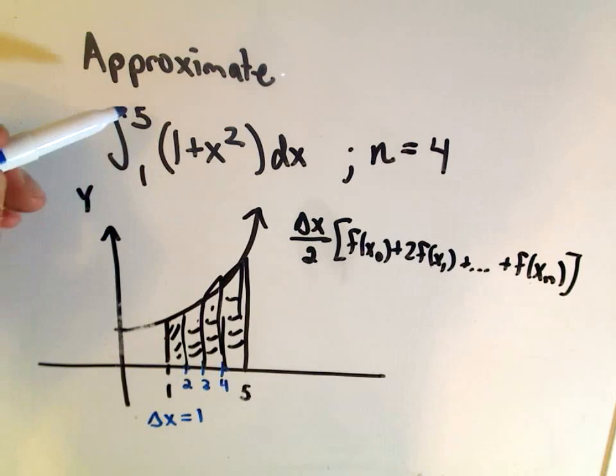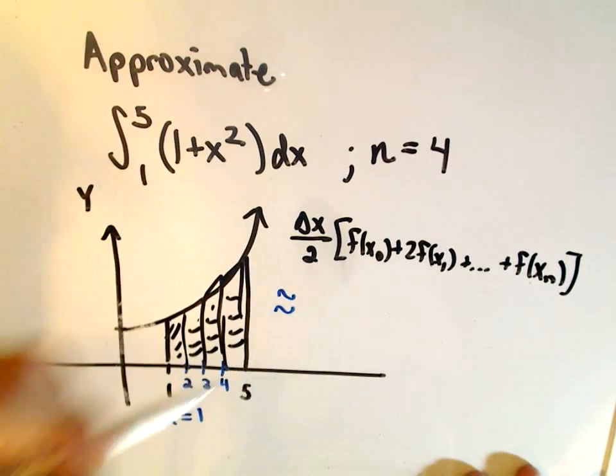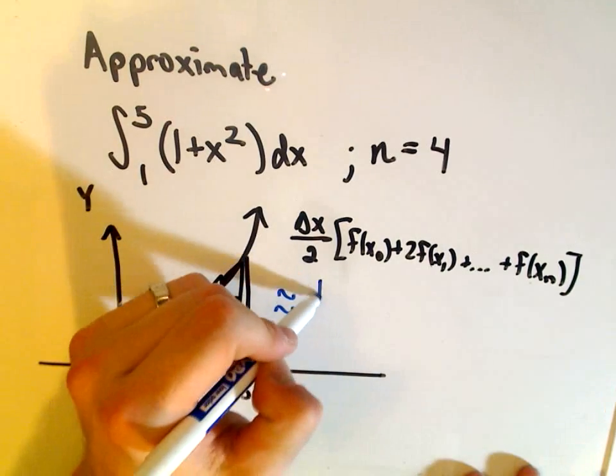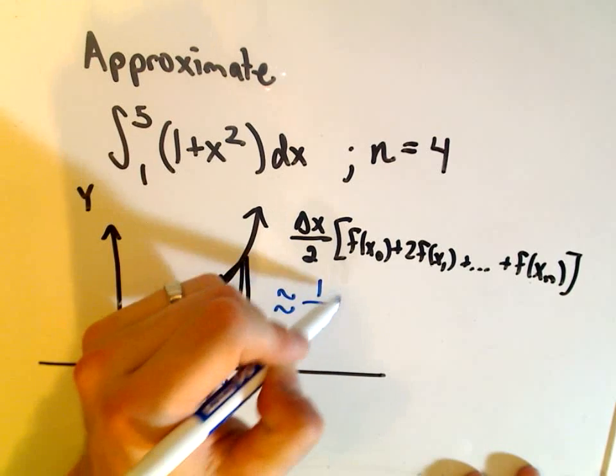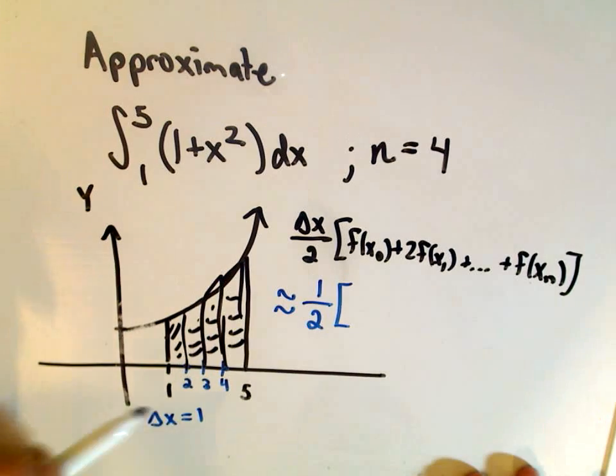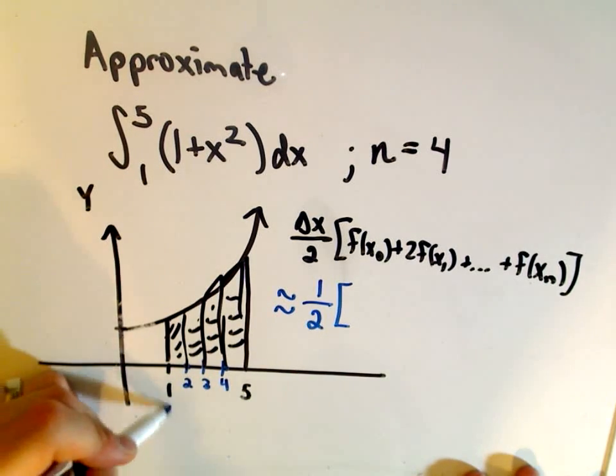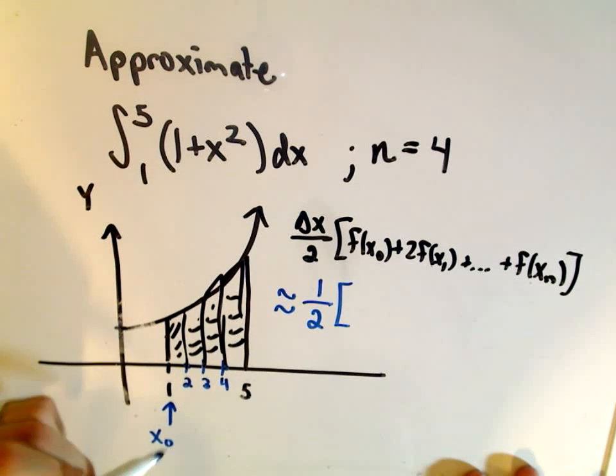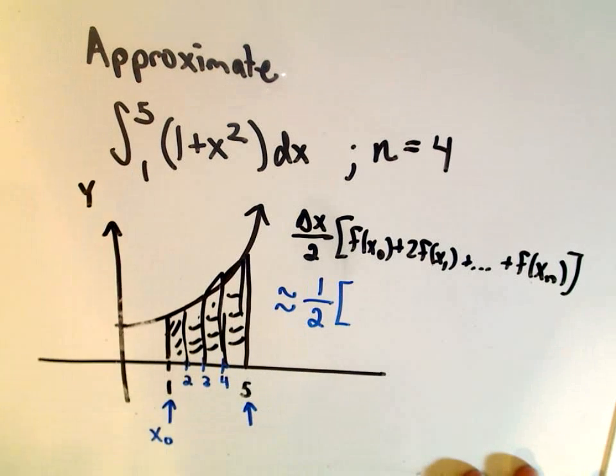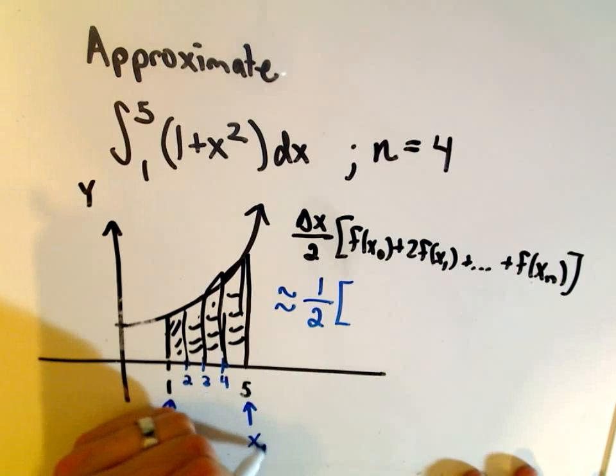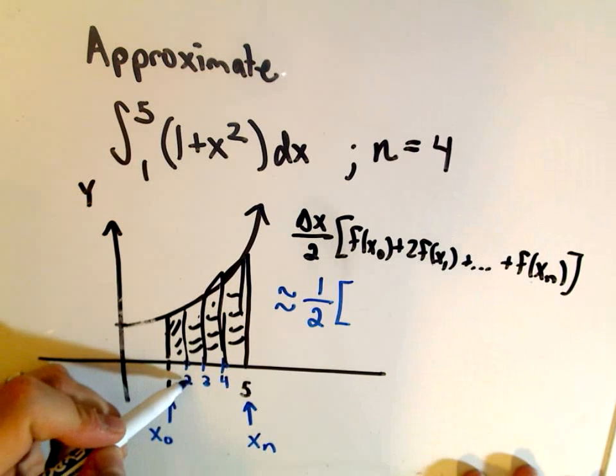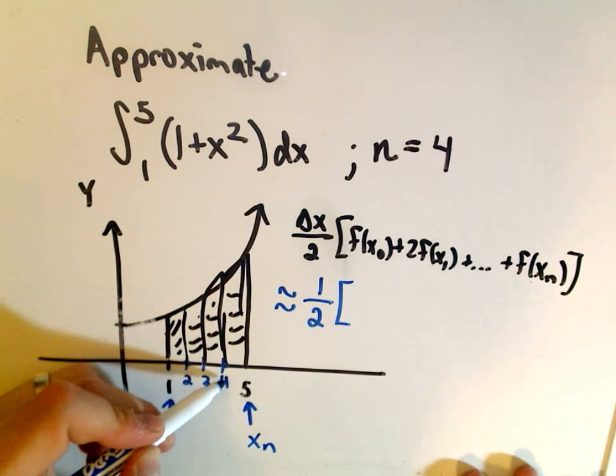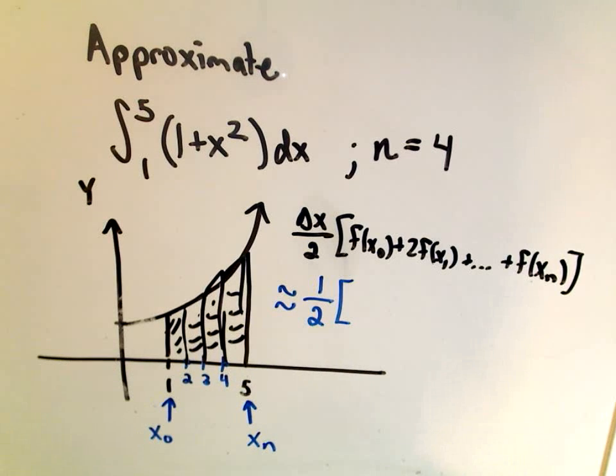So if we fill all of this information in, it says the integral from 1 to 5 is going to be roughly equal to the value of delta x, which is 1, divided by 2. And then for my points, the first point is going to be our x sub 0. The last point generically, that's your x sub n. And this would be your x sub 1, x sub 2, x sub 3, x sub 4, or the last one.